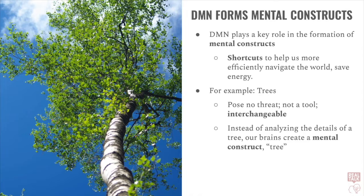Instead, in order to save processing power, the moment our brains recognize that this thing we're looking at is a tree, our brains create a mental construct of a tree. We don't have to see the bark. We don't have to see the branches. It's a tree — a thing we all know. And this is the work of the default mode network, and it does save the brain quite a lot of energy.